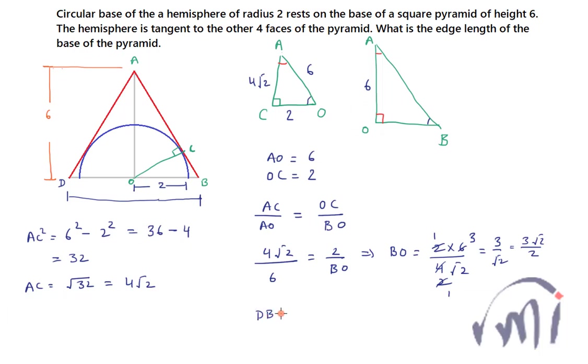So this will be equal to 2 multiplied by 3√2 divided by 2. This 2 will cancel this 2, and DB will be equal to 3√2.